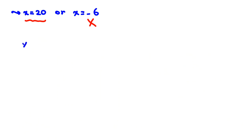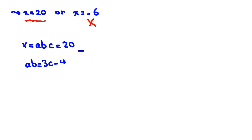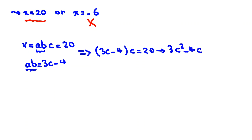With x = abc = 20 and ab = 3c - 4 from the second equation, replacing ab gives (3c - 4)·c = 20, so 3c² - 4c - 20 = 0.